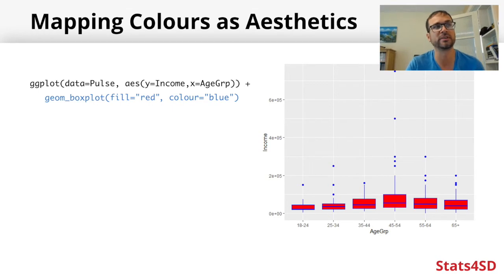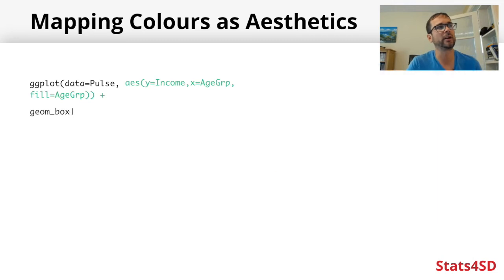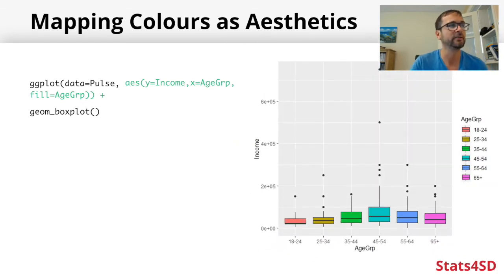If we want different colors for different age groups, we'd want it mapped to age group. We write our code like this: as well as having y equals income and x equals age group within our aesthetic statement, we also set fill equals age group. Age group is doing two things in this code. Then we take everything out of geom_boxplot and just have the default settings.